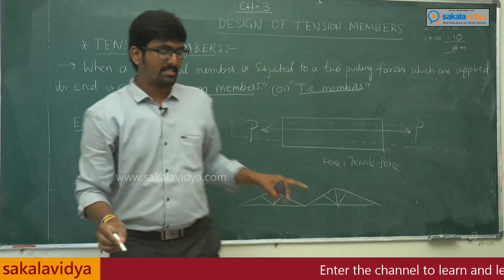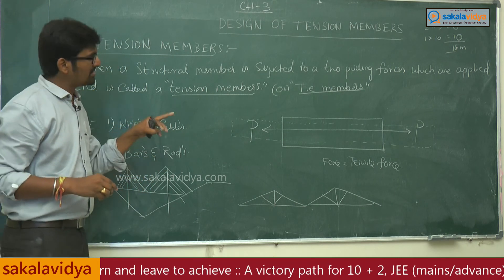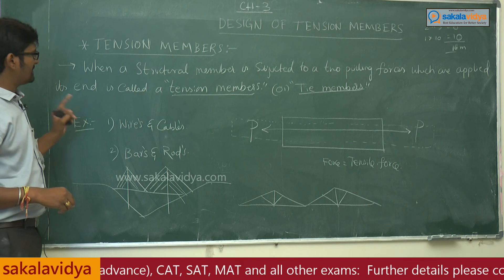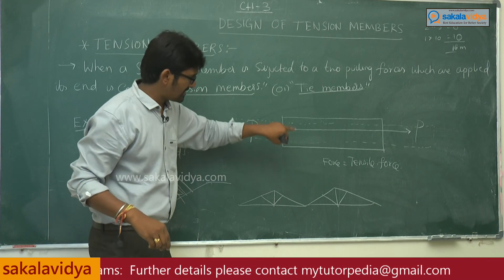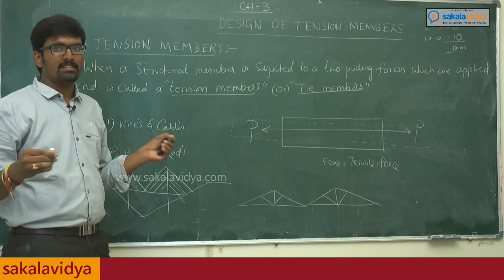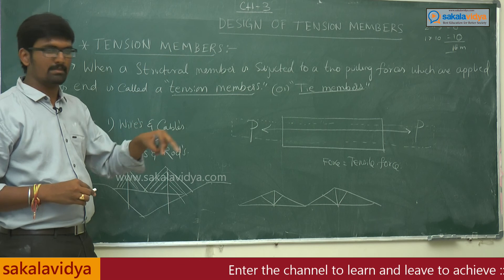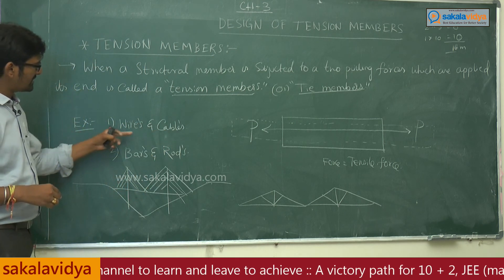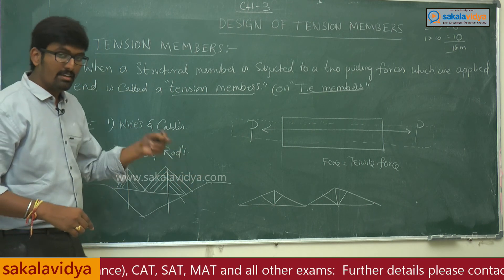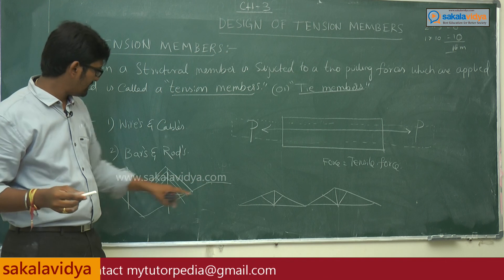To summarize, a tension member is a structural member subjected to two pulling forces applied at its ends, also called a tie member. The two main examples are wires and cables — mostly used in suspension bridges — and bars and rods — used in construction of lightweight structures, industrial roofs, etc. This truss element shown here is a tension member.